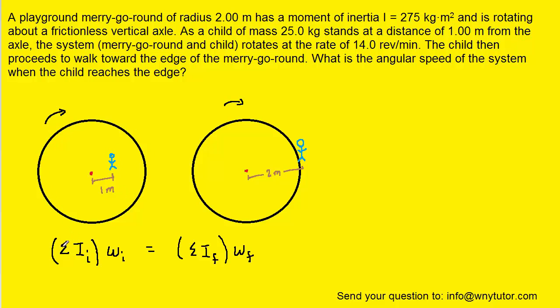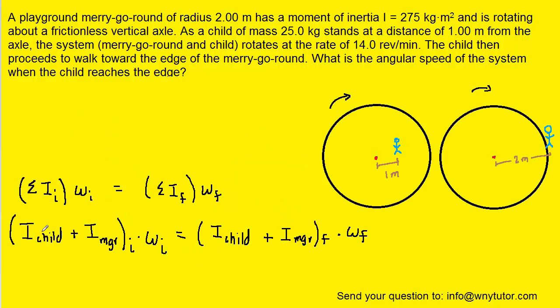So let's substitute in an expression on the initial side of the equation that includes both the merry-go-round and the child, and then we'll do the same thing on the final side. So we've expanded the total rotational inertia into I_child plus I_MGR. We use MGR to represent merry-go-round, and we did the same thing on the final side.